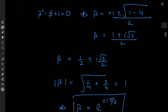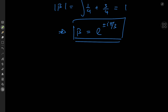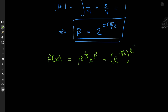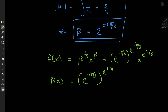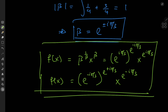We have two possible solutions depending on the beta parameter chosen. The first is f of x equals e to the i pi over three, raised to the power of e to the negative i pi over three, times x to the e to the i pi over three. The second is f of x equals e to the negative i pi over three, raised to the power of e to the positive i pi over three, times x to the e to the negative i pi over three. These are two solutions to our functional differential equation — they look pretty dope and the solution development was pretty cool.